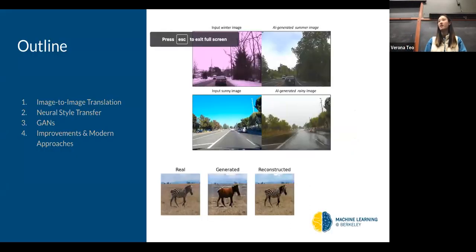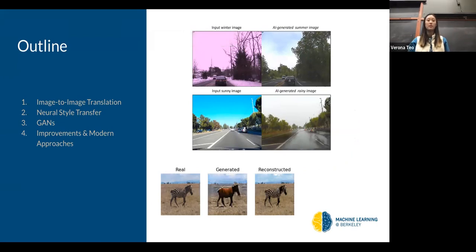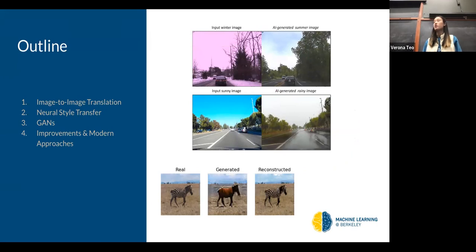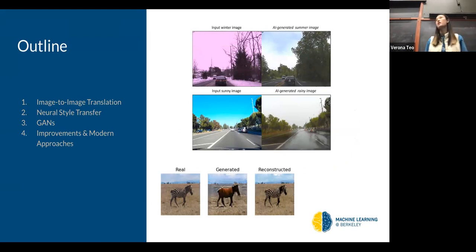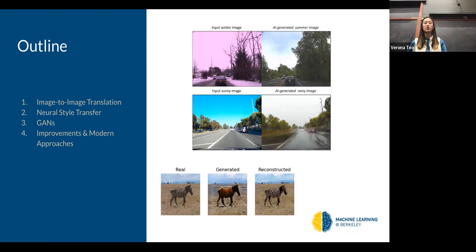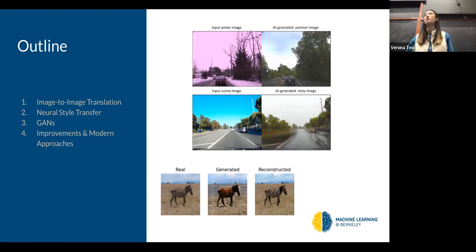Today's lecture is on stylizing images. We'll mostly talk about image-to-image translation — what it is and some of the techniques for doing it. In particular, I'll go a bit more in depth about a subtopic within image-to-image translation: specifically neural style transfer. Then I'll go into a few models that utilize GAN architectures, and some other examples of how we might approach image-to-image translation tasks.